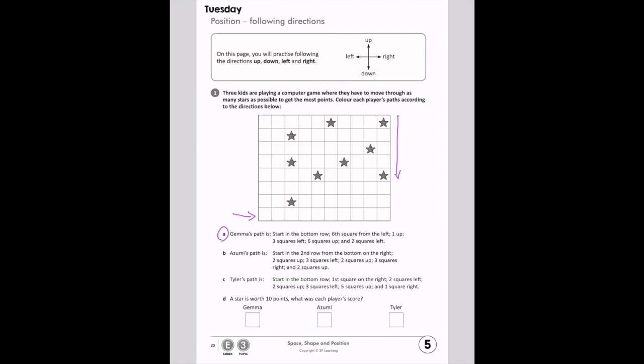Bottom row, sixth square from the left. So again, left, right. We're going to count one, two, three, four, five, six. Sixth square from the left. We're going to color that. Then the next instruction is to go one up. I'm going to go one up, and then it says three squares left. I'm going to go three squares left. One, two, three.